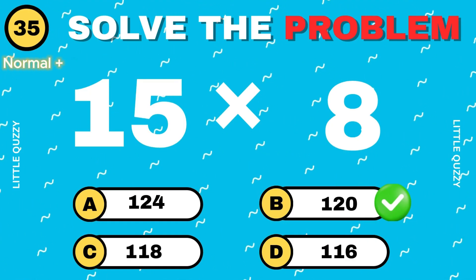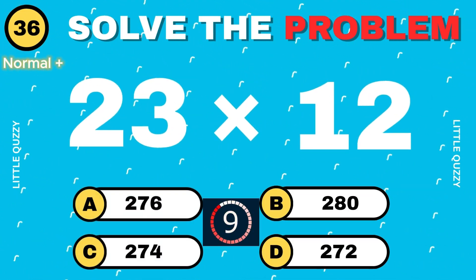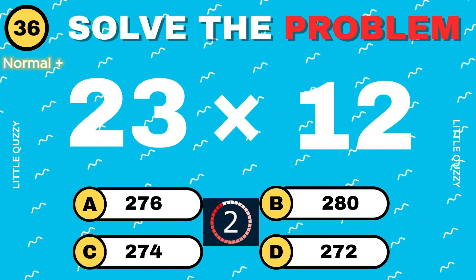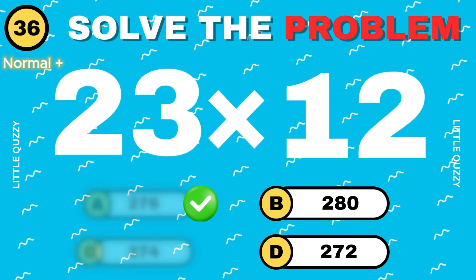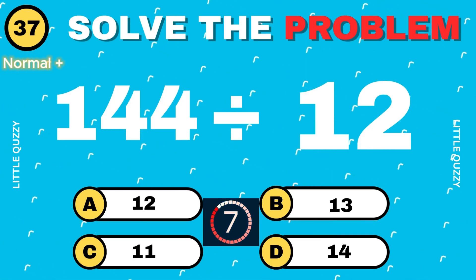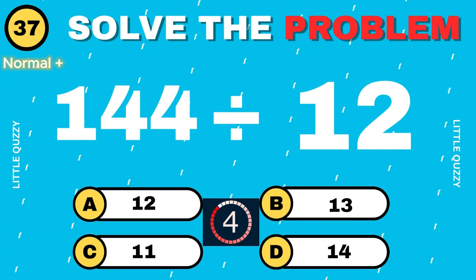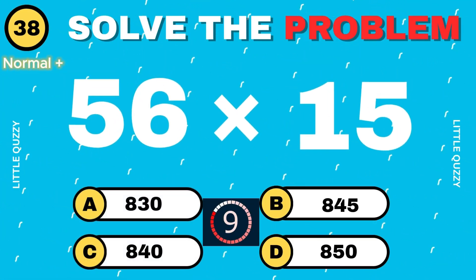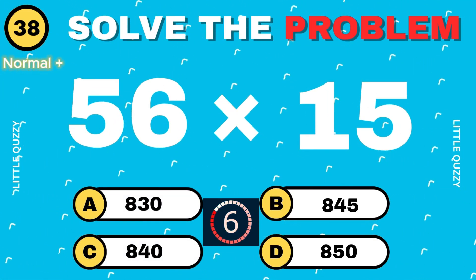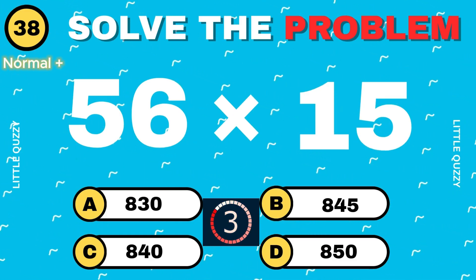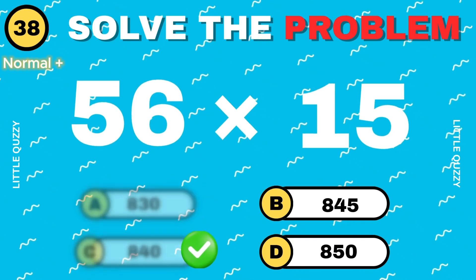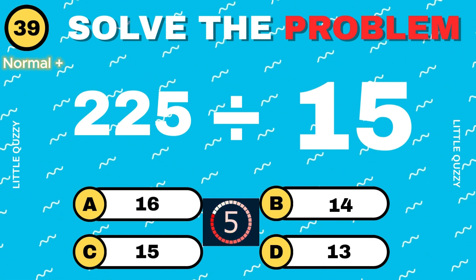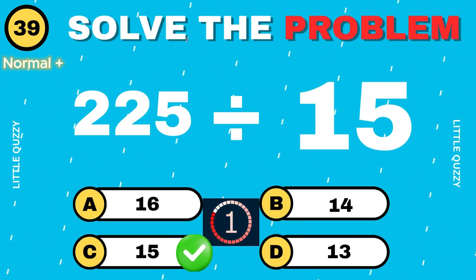What is 23 times 12? Correct answer: 276. What is 144 divided by 12? Correct answer: 12. What is 225 divided by 15? Correct answer: 15.